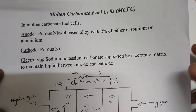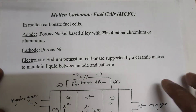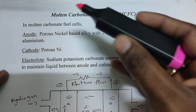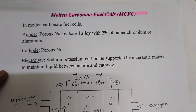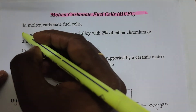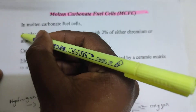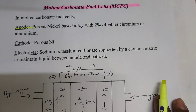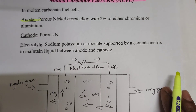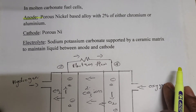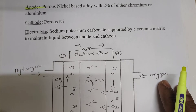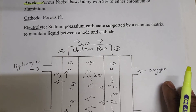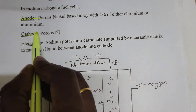In the molten carbonate fuel cell (MCFC), the anode is a porous nickel-based alloy with two percent of either chromium or aluminium. The cathode is porous nickel.